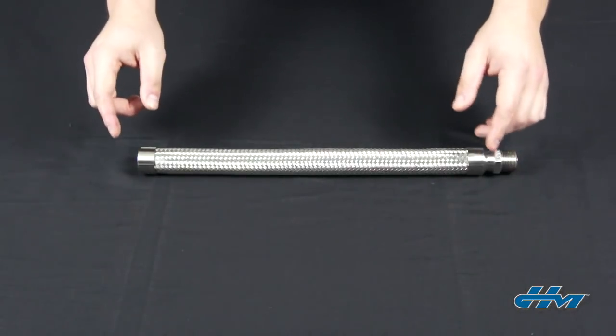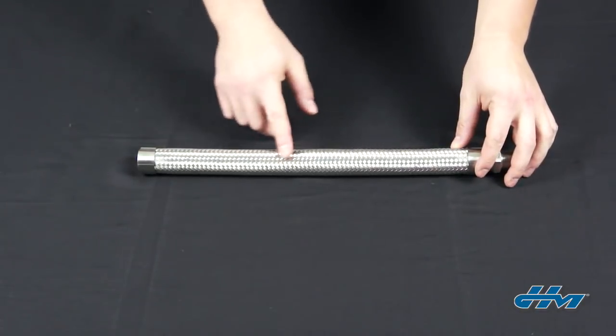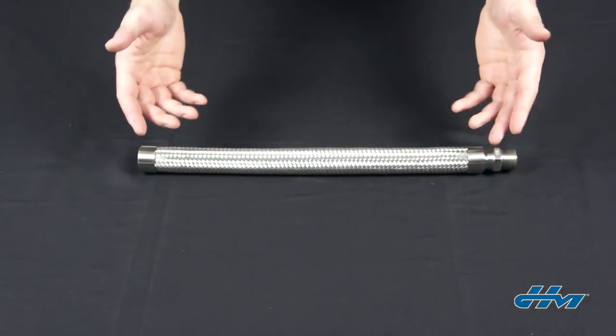A metal hose cannot move axially, which means compression and extension, because of its outer braid. The braid gives the hose its ability to handle pressure, and straining it or compressing it makes the hose lose that ability.